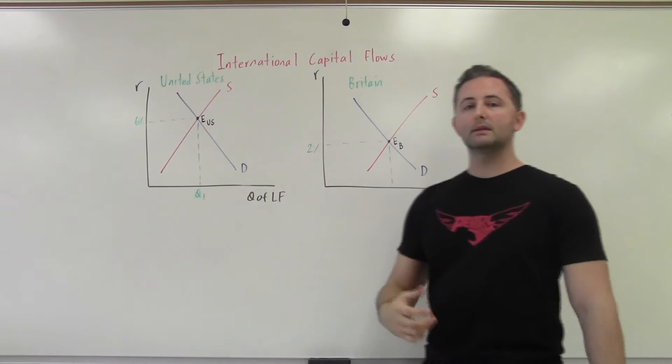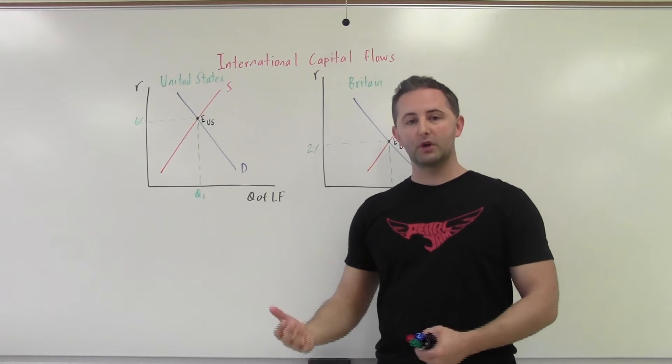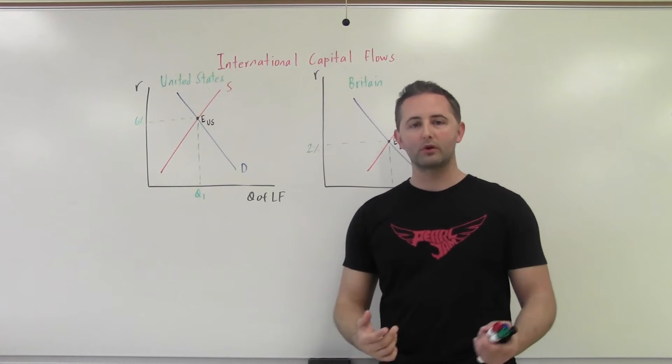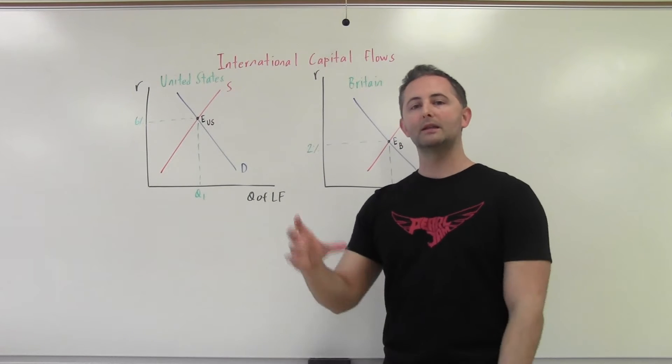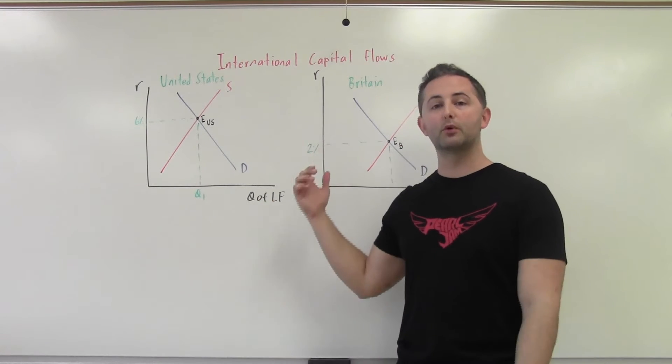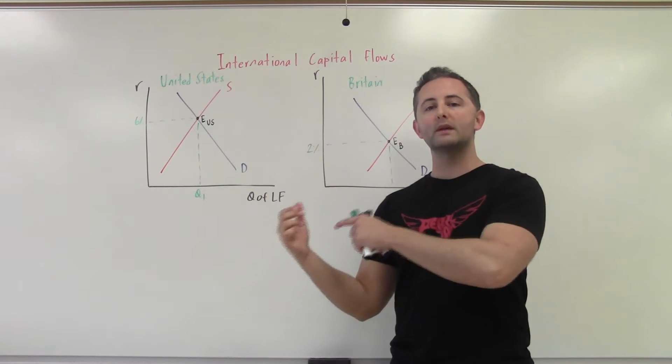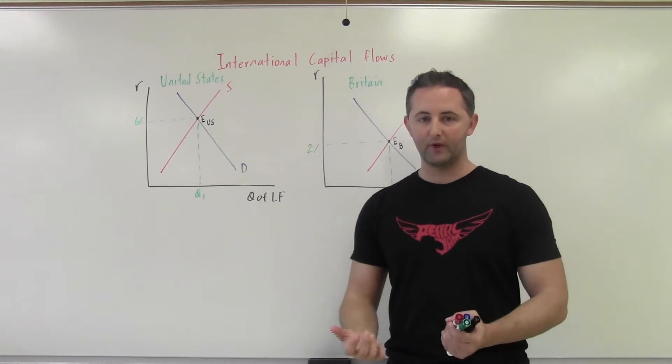On the other hand, when capital outflows occur, or negative inflows, money is flowing out of the country. So people are taking their money from the United States and instead of saving it here, they're saving it, for instance, in Britain. Money is flowing out of the U.S., so it's going to decrease the supply of loanable funds.